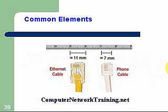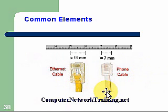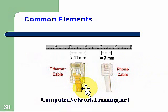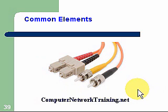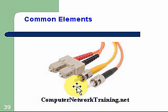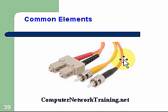The Ethernet cable looks a little like a phone cable, but it's considerably larger — 11 millimeters across versus 7 for the phone cable. Ethernet cable has 8 wires, while the phone cable generally has 4 wires. For fiber optics cables, we have the ST and SC cable types, and each one of these has a fiber optic thread running through it.